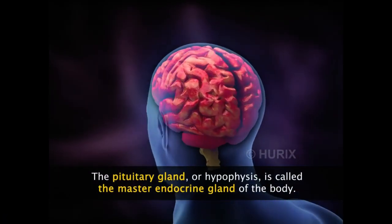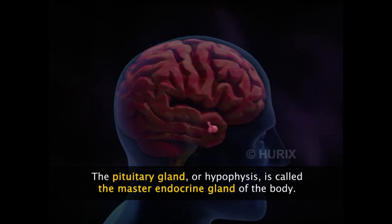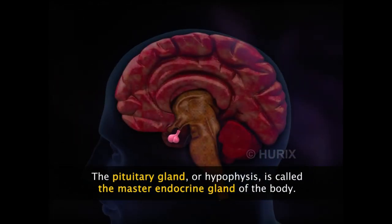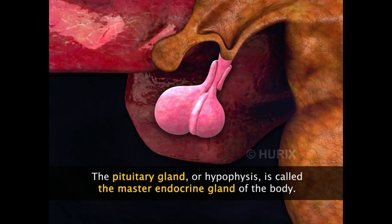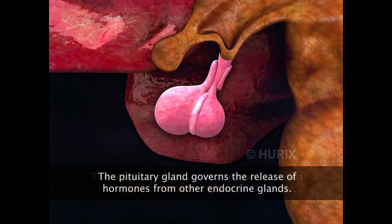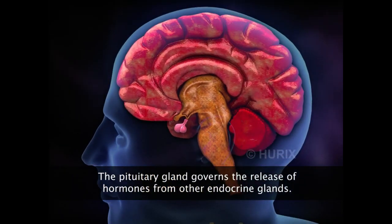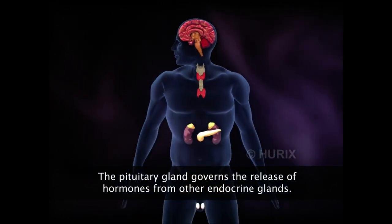Within the human brain is located a small endocrine gland which governs the functioning of all other endocrine glands in the body. This master endocrine gland is the pituitary gland or hypophysis. It is called the master endocrine gland as it governs the activity of all other endocrine glands in the body.